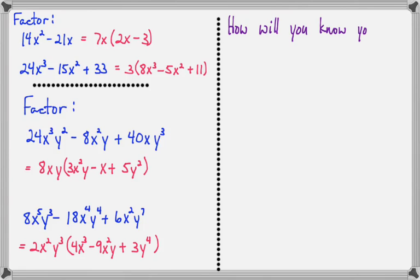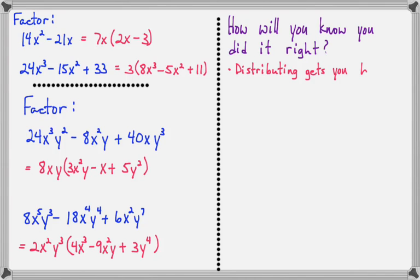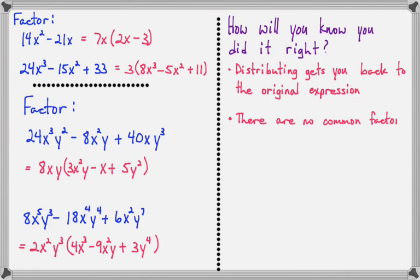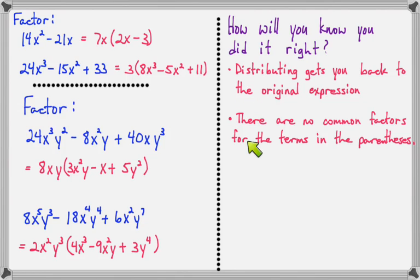Just a couple of ways you'll know you've done it correctly: if you can distribute and get back your original expression, you know you have a good factor outside the parentheses. And if the terms inside don't have any common factors, that's also a good sign. You need to check both of these things before you know you've done it right. We'll see you later, bye.